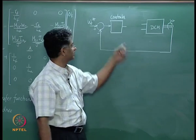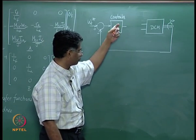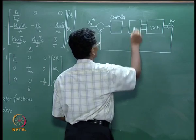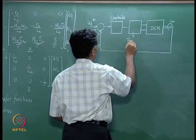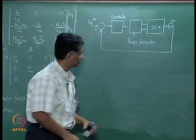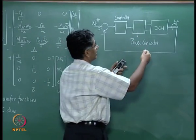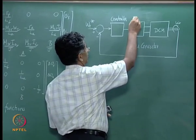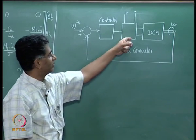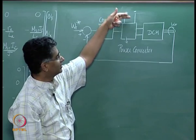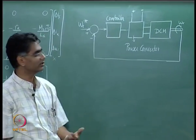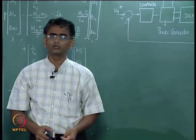The output from the controller cannot directly drive the machine — you need one more block in between, normally called the converter. The DC machine gets its armature voltage through this converter block. You supply the converter with a DC supply, and it determines in what manner that DC supply is conveyed to the DC machine based on what the controller says. So this is a typical closed-loop system.